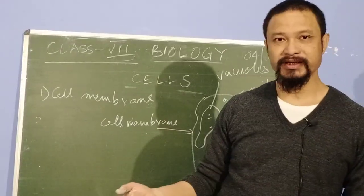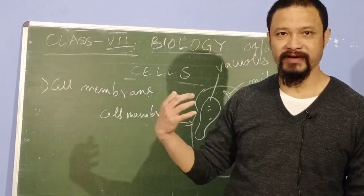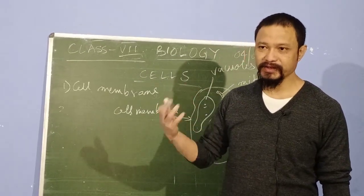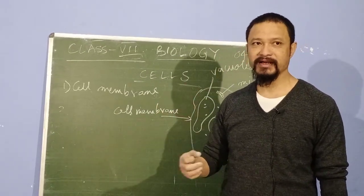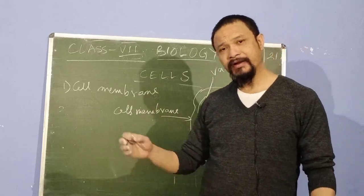Whatever component, whatever nutrients that the cell needs to function properly, through this membrane, selectively permeable membrane, it goes inside. And after the cell uses certain things that have to be taken out of the cell, expelled out of the cell, it is also done through the cell membrane.